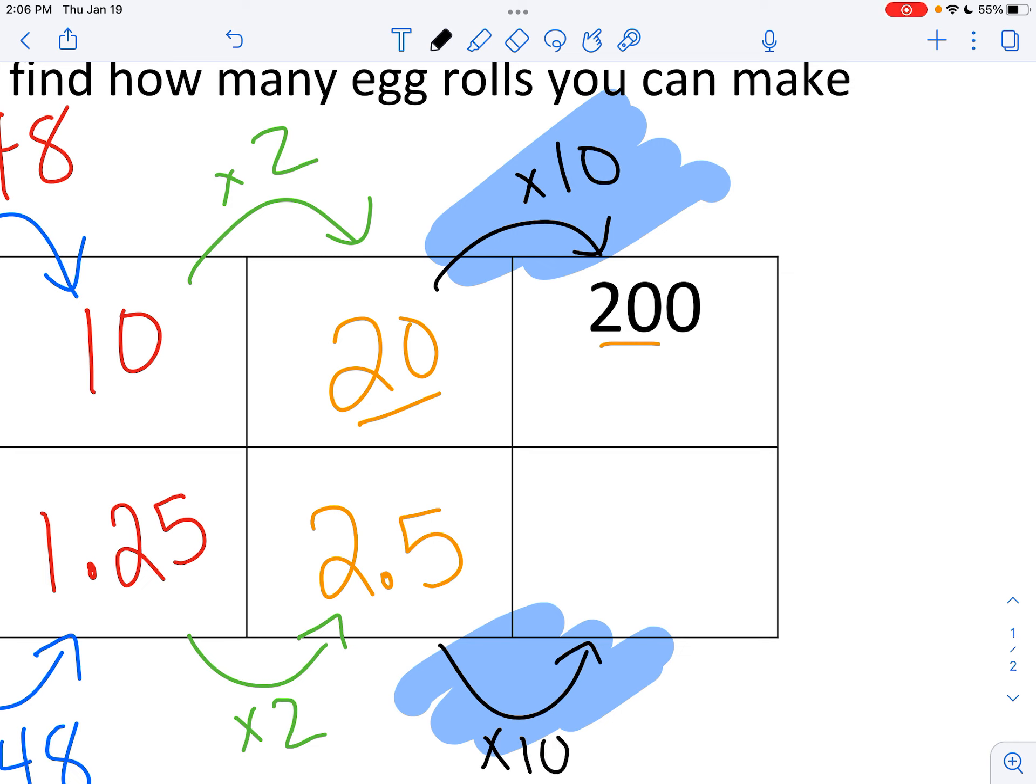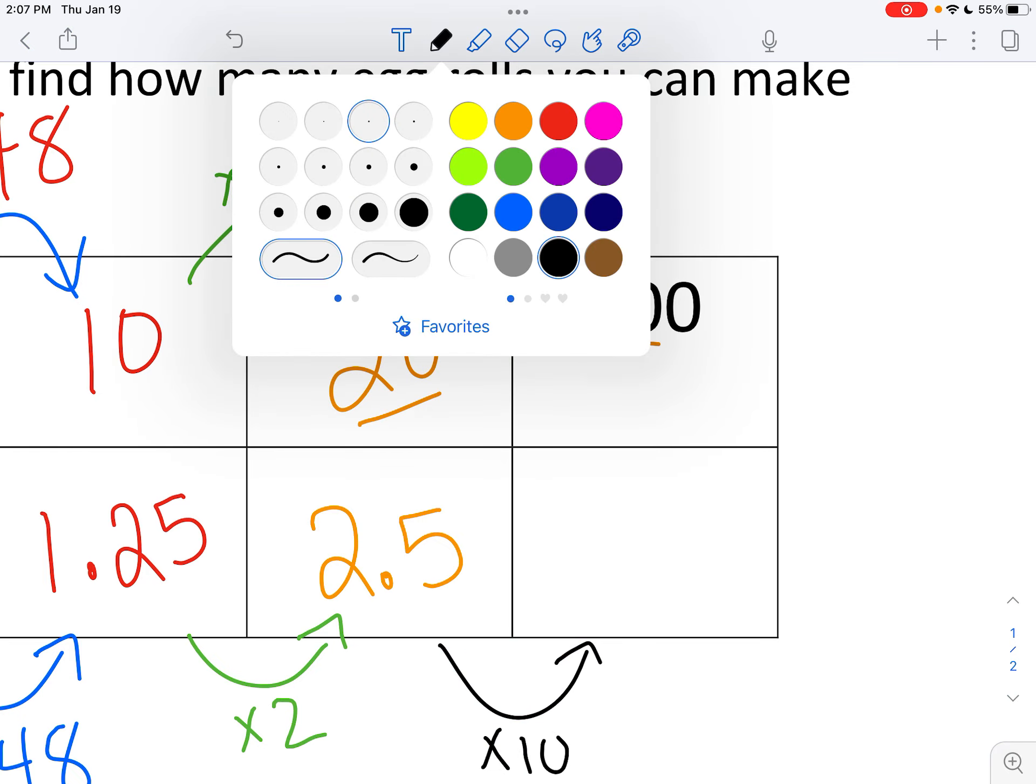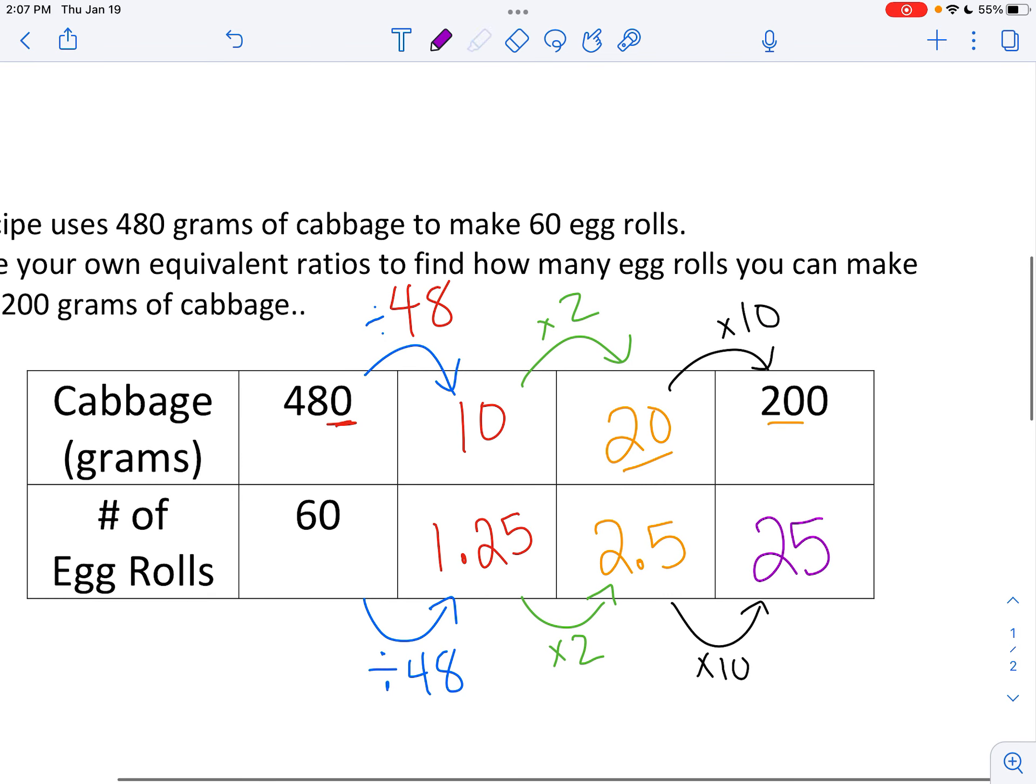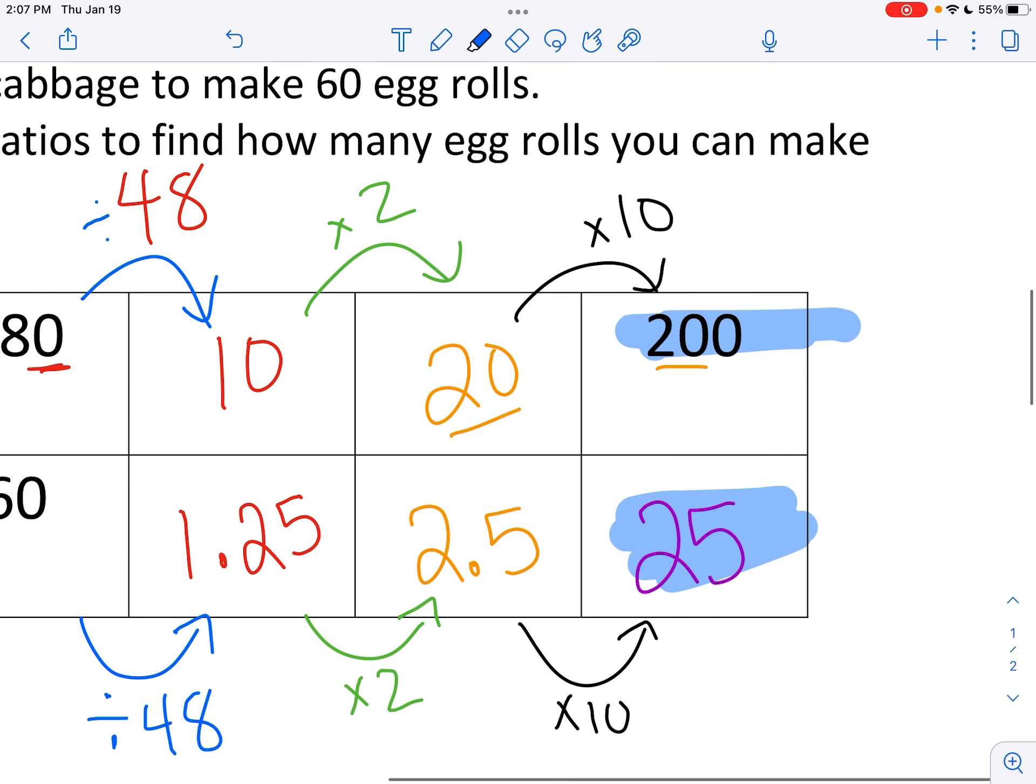2 and a half times 10 gets me to 25. So this now says 200 grams of cabbage would make 25 egg rolls. So I'm going to circle my final answer. It's going to make 25.